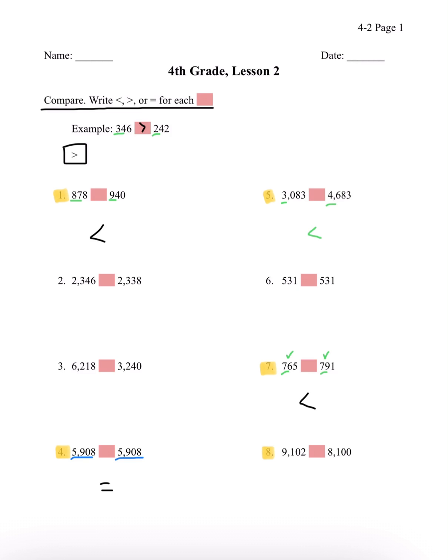Number 8, we have 9,102 and 8,100. Let's look at the 1,000th place — we have a 9 and an 8. We know that 9 is bigger than 8, so 9,102 is greater than 8,100.